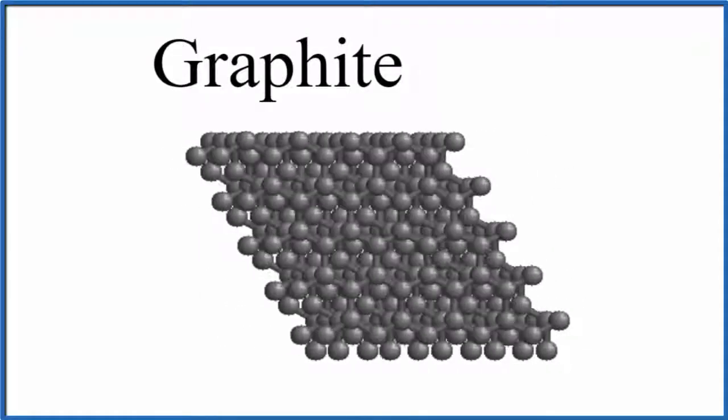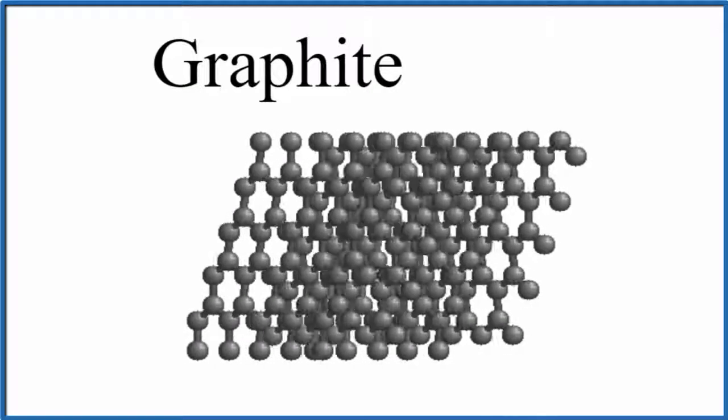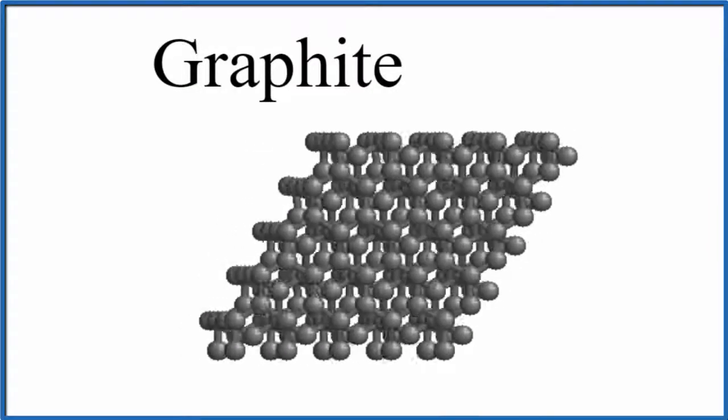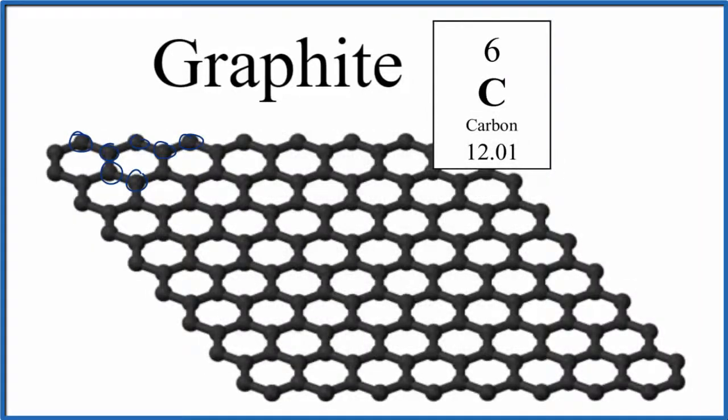And finally, even though we say it's made up of nonmetals and that it's a covalent molecular compound made of nonmetals, it does conduct electricity. That's because there are delocalized electrons that can move across the graphite that will conduct electricity.